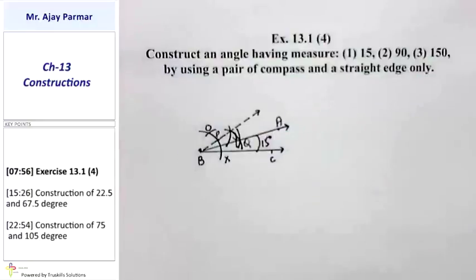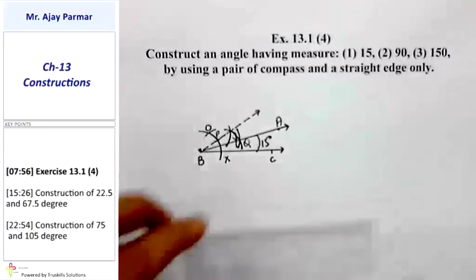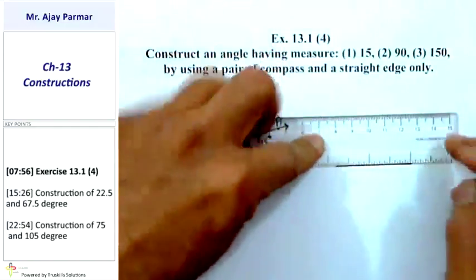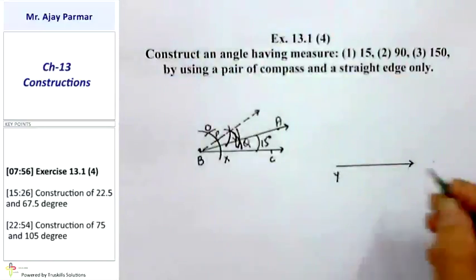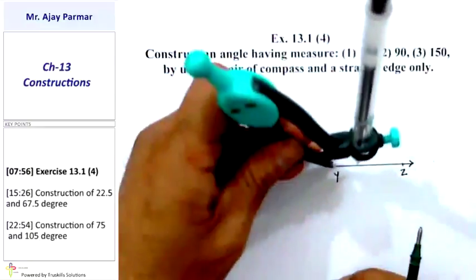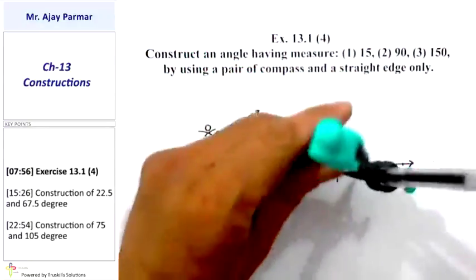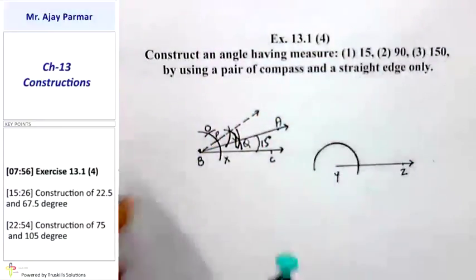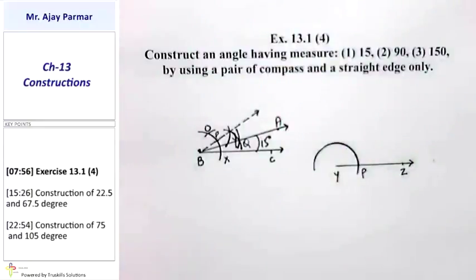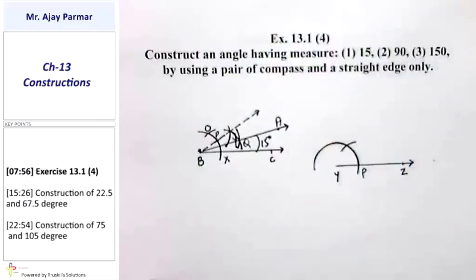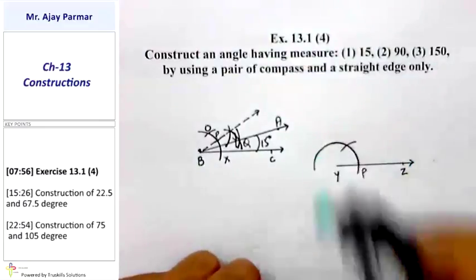Now let us construct 90°. 90° is nothing but the bisector between 60° and 120°. First, we construct any ray — say ray YZ — where Y is the initial point and Z is any point on it. Taking any arbitrary radius with Y as the center, I draw an arc that intersects ray YZ at point P. 60° is what I personally call the mother angle because all angles are derived from 60°. This arc is of 60°. Using 60° as the center, I draw another arc — that is the arc of 120°.